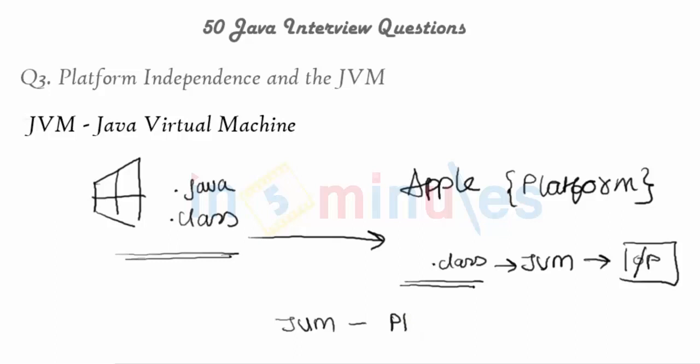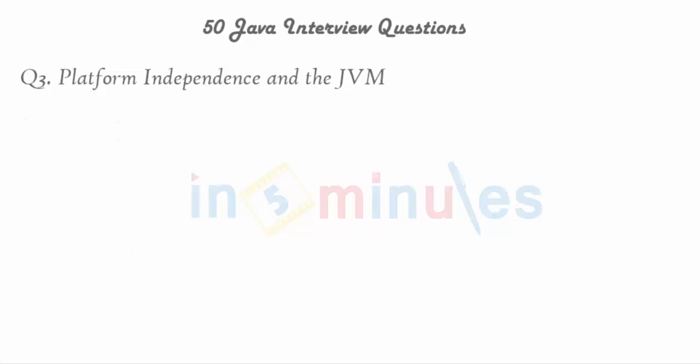Now the next question is: is the JVM itself platform independent? Windows has a different implementation of the JVM, Mac has a different implementation, and Solaris has yet another implementation. Since each platform has its own implementation of the JVM, we can safely conclude that the JVM is platform dependent. The JVM for Windows will not work on the Apple platform, and vice versa.